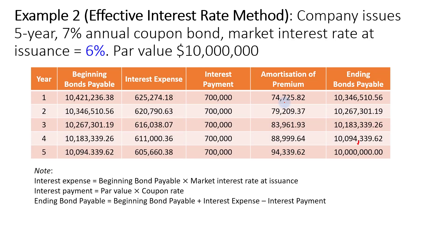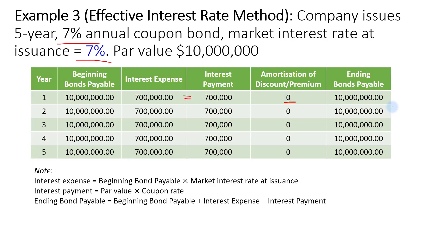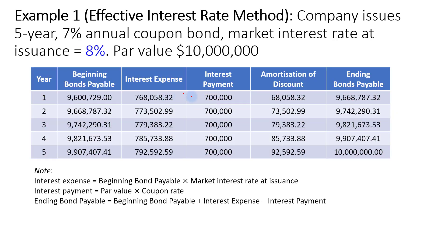For a premium bond, the interest expense will be less than the interest payment and the ending bond payable (carrying value) will decline until it approaches par. For a discount bond, the interest expense will be greater than the interest payment, so the ending bond payable balance will increase every year until it reaches par value. That is the effective interest rate method.